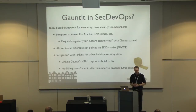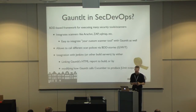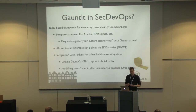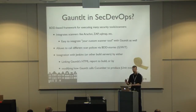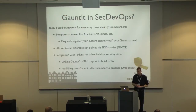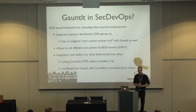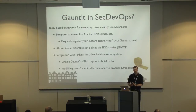Another tool in that area is Gauntlt — also a behavior-driven design framework for executing many security tools. It integrates with more scanners: Arachni, ZAP, SQLMap, and other specialized scanners. You can easily integrate your own custom tool with Gauntlt. That's especially useful if you want to execute a wide array of different scanners against the target during the CI job. In terms of integrating into the build system, it's similar to BDD Security but not as tightly integrated. You can get an HTML report linked in Jenkins, and with a small tweak to the source code you can make it emit JUnit output format, which you can then process as regular unit test results in your CI system.